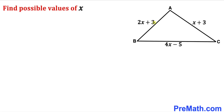In this video we have got triangle ABC as you can see in this diagram, such that its side lengths are represented by 2x plus 3, x plus 3, and 4x minus 5 respectively. Now we are going to find the possible values of x.